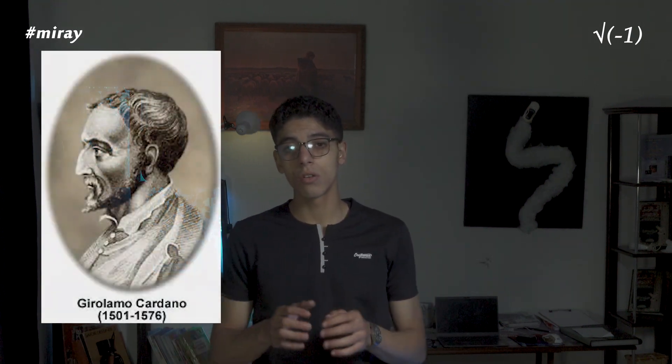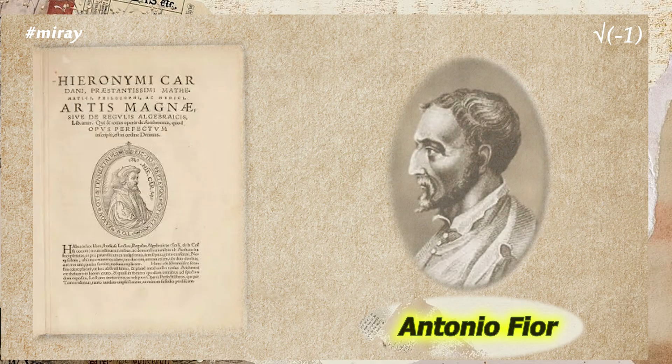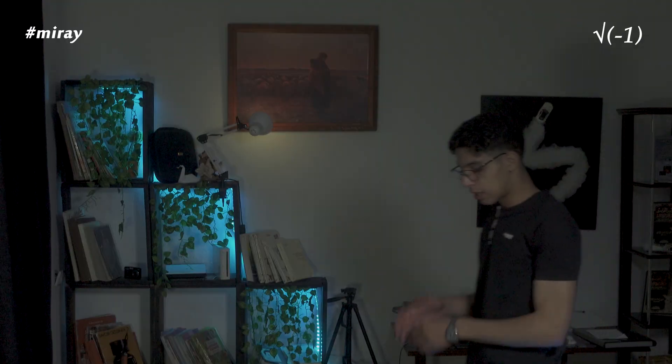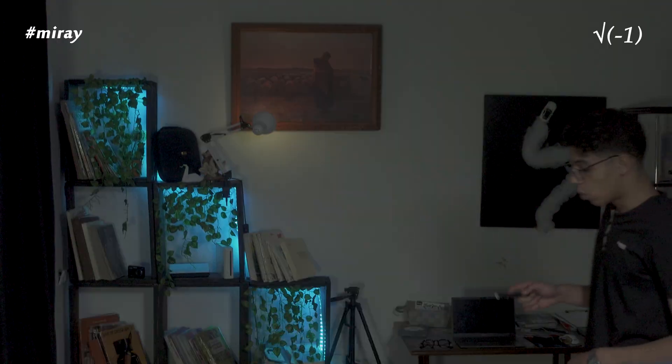Later, Niccolò Tartaglia independently discovered solutions for certain cubics, but also chose to hide them. The turning point came with Girolamo Cardano. Tartaglia swore him to secrecy, but Cardano eventually published the solutions in his famous book, Ars Magna. Why did Cardano break his promise? He was wealthy and reputation mattered more than honor — he wanted scientific glory. But here's the twist: while presenting the solution, Cardano encountered a strange cubic equation.